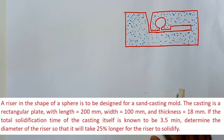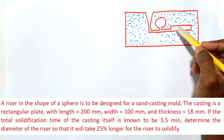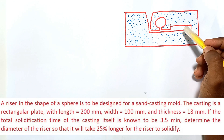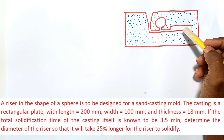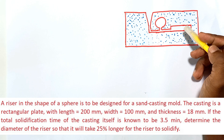In this problem, a riser in the shape of a sphere is to be designed for a sand casting mold. The casting is a rectangular plate with a length of 200 millimeters, width of 100 millimeters, and thickness of 80 millimeters. The total solidification time of the casting is known to be 3.5 minutes. Determine the diameter of the riser so that it will take 25% longer for the riser to solidify.